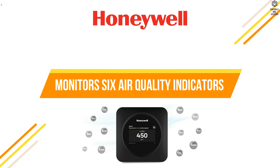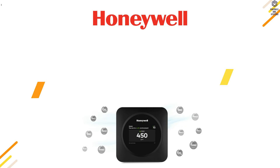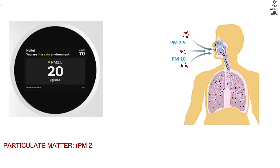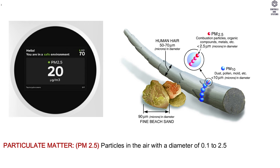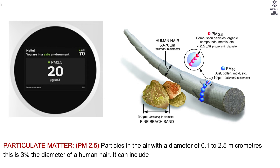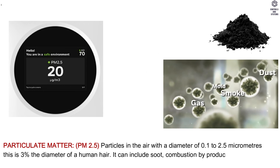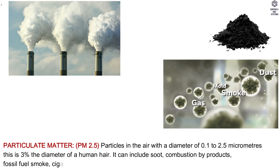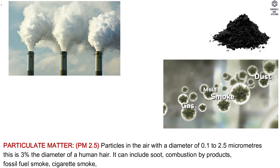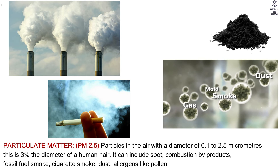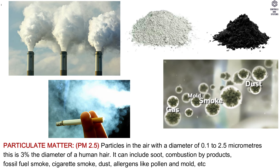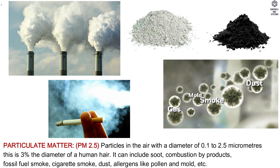Monitor six air quality indicators. Particulate matter PM2.5: particles in the air with a diameter of 0.1 to 2.5 micrometers — that is 3% of the diameter of a human hair. It can include soot, combustion by-products, fossil fuel smoke, cigarette smoke, dust, and allergens like pollen and mold.